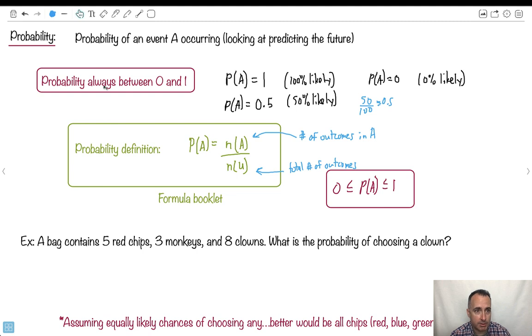What's the chance? The probability of C for clown - it's going to be the number of outcomes in clown. How many clowns are there? There are eight clowns. Divide that by the total number of outcomes. How many outcomes are there? There's eight plus three plus five. Five plus three is eight, eight plus eight is 16. So I got eight over 16.